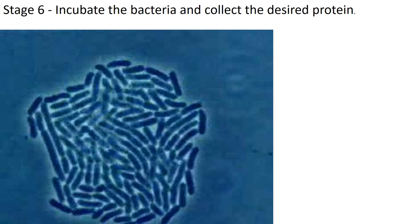Stage six: incubate. Now that we know the bacteria all have our plasmids, we're ready to grow them up. Put them in an incubator — and the great thing about bacteria is they divide very quickly. Every single one of these bacteria will have our bacterial plasmid in, and they'll all be happily making our desired protein.